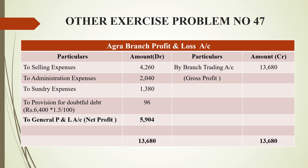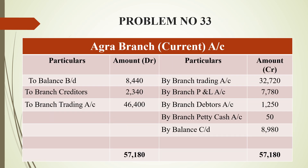After totaling the debit side, the net profit is 5,904 rupees, which is transferred to the general profit and loss account in the head office book. Now for the branch current account, the opening balance of 8,440 rupees comes on the debit side as the amount inside the business from the previous year. The next entry is branch trading account debit side reduced by 2,340.